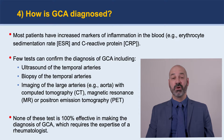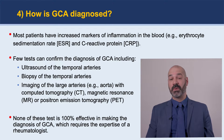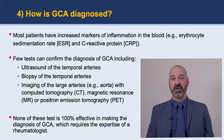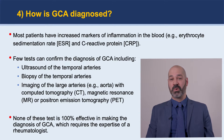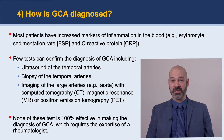How do we diagnose GCA? Luckily today we have several tools we can use to make a diagnosis. Some of these tools are less specific. For example, the majority of patients will have increased markers of inflammation in the blood — something called erythrocyte sedimentation rate, or ESR, or C-reactive protein, or CRP. Most patients will have these markers elevated, but the problem is that these markers don't tell us exactly what it is — infections and other rheumatologic diseases can also cause elevation of these markers.